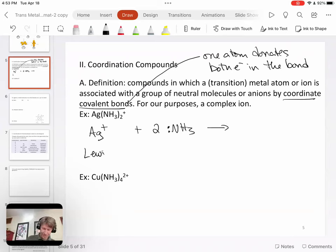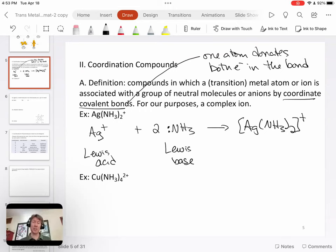We have a Lewis acid, the silver ion, we have a Lewis base, the ammonia, and those are going to form Ag(NH3)2 with a plus charge on it. And that would be similar for this example down here for copper amine, except there would be four of them.